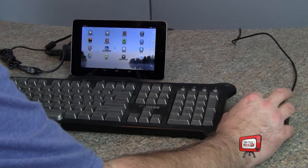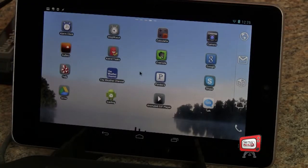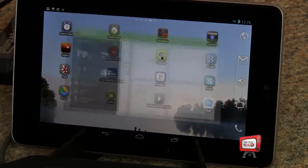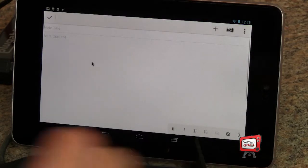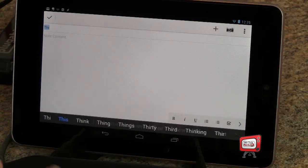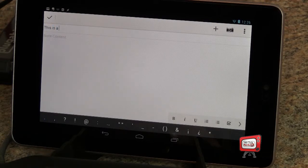And here, I'm using a USB hub to connect a keyboard and a mouse to my Nexus 7. As you can see, I can control a pointer and type with the keyboard, just like any other computer.